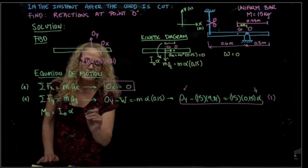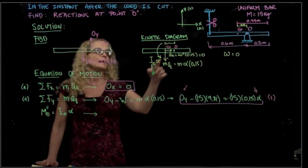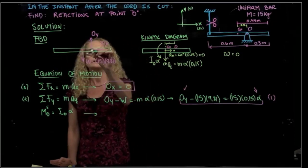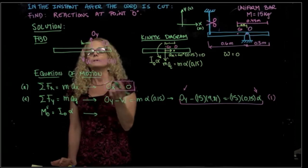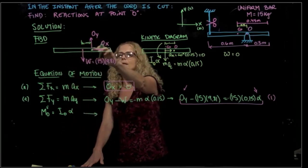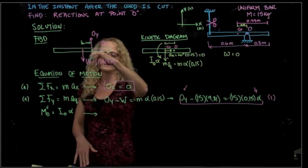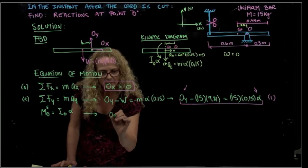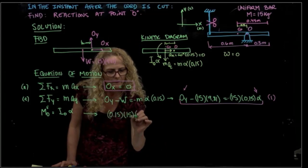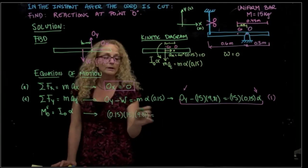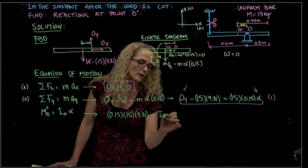If I take moment of our external forces in this diagram, what do I have? Actually, the only force that makes a moment is the weight, so that will be positive 0.15 times weight, which is 15 times 9.81, equals inertia at O times alpha.